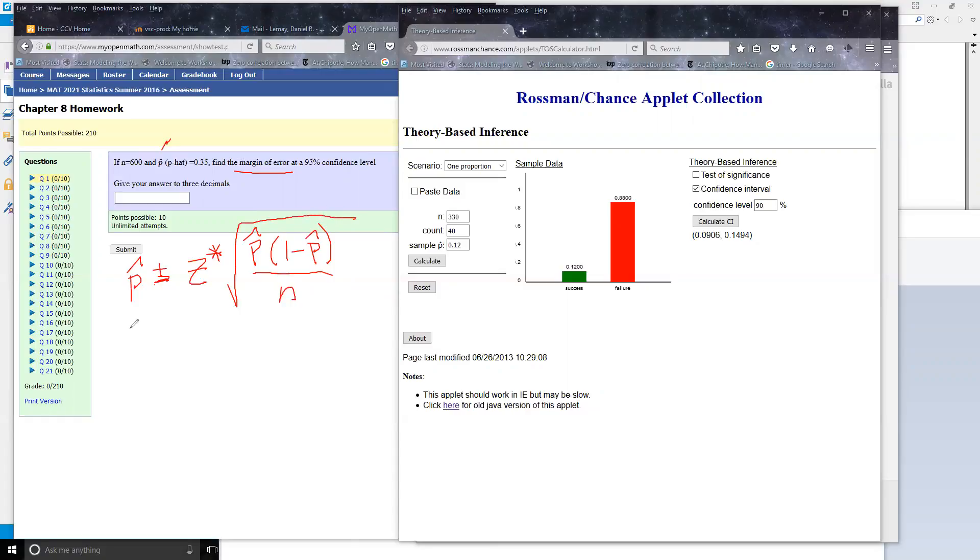So this plus or minus part, that's the margin of error, and that's what they're asking us to find for this problem. So if you look in that little mini table I uploaded for you, there's the 95% confidence level.